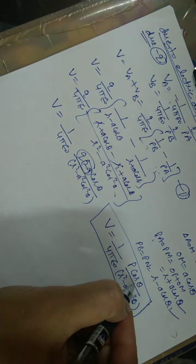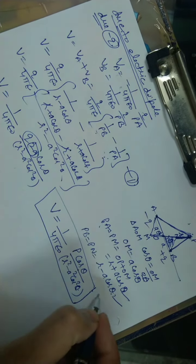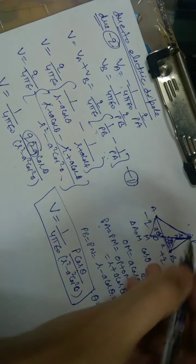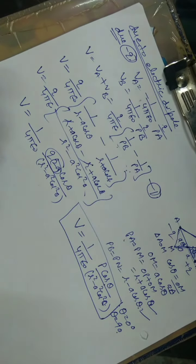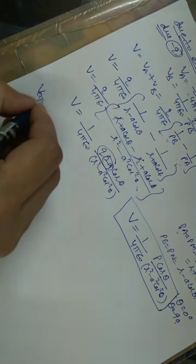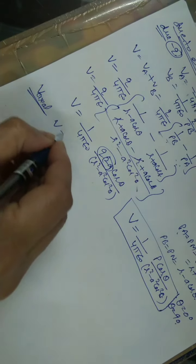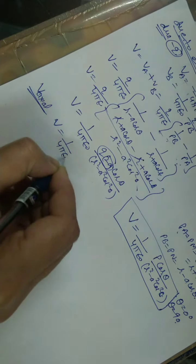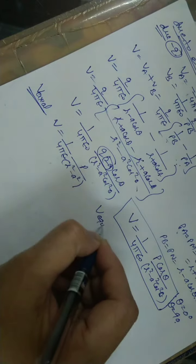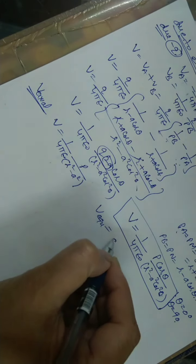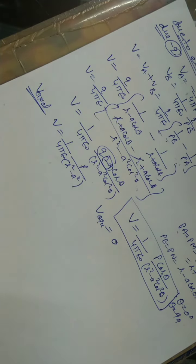For the axial line, theta equals 0, so cos 0 = 1, and the axial potential is V_axial = 1/(4πε₀) · P/(R² − A²). For the equatorial line, theta equals 90 degrees and cos 90 = 0, so the electric potential at the equatorial line is zero.